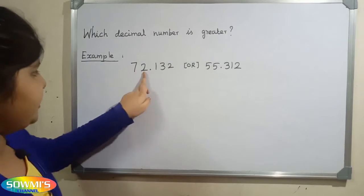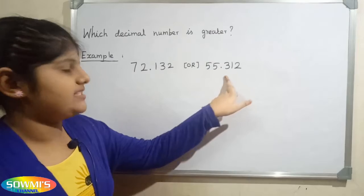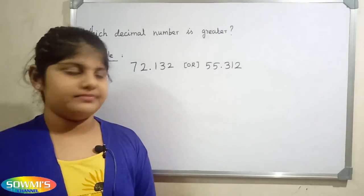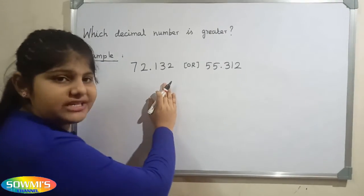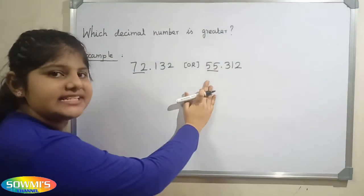For example, 72.132 or 55.312. First we have to check the whole number part. Here the whole number part is different.